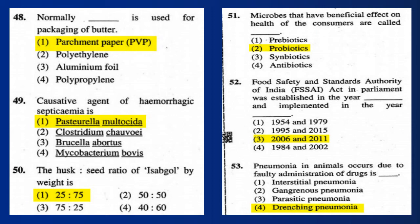Question 51: Microbes that have a beneficial effect on the health of consumers are called probiotics. Question 52: The Food Safety and Standards Authority of India (FSSAI) Act was established in Parliament and implemented subsequently.